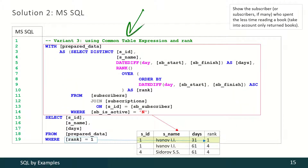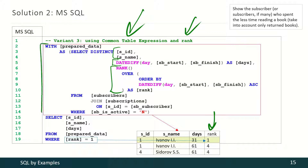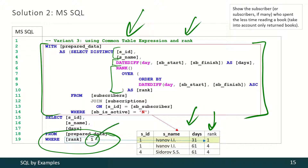Or we may use a common table expression and rank. Here we are selecting information about our subscribers, the lengths of periods of their book reading, and we are ranking those periods by their lengths. Then we use the information provided by the CTE and apply the condition that the time period should be the shortest one. And that is how we get our final result.